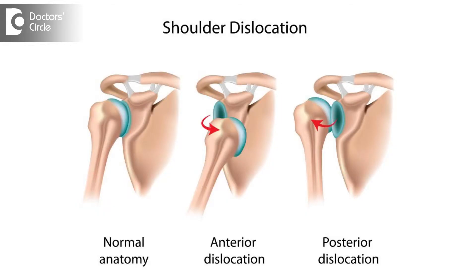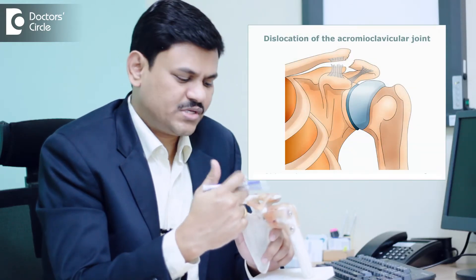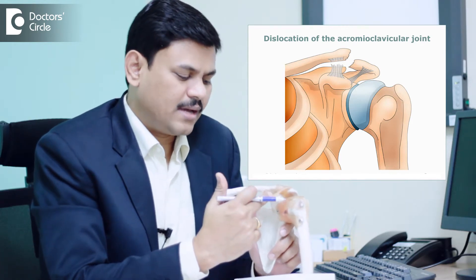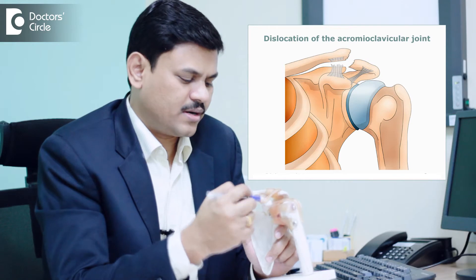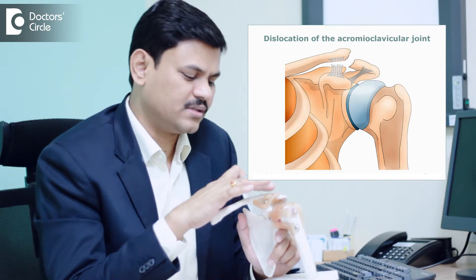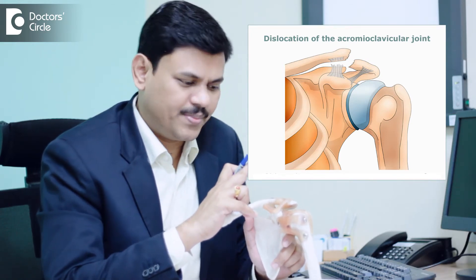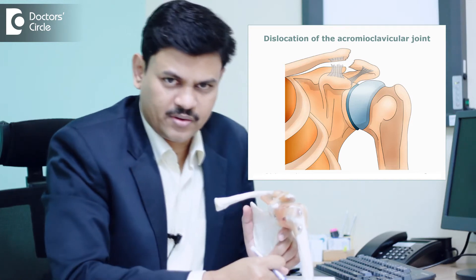The dislocation of the shoulder joint is one of the commonest conditions. The other common dislocation is the dislocation of the acromioclavicular joint. This acromioclavicular joint provides attachment to ligaments surrounding the shoulder joint. If the ligaments are broken and if the capsule of the joint is broken then the acromioclavicular joint tends to pop up. That is called the dislocation of the acromioclavicular joint.